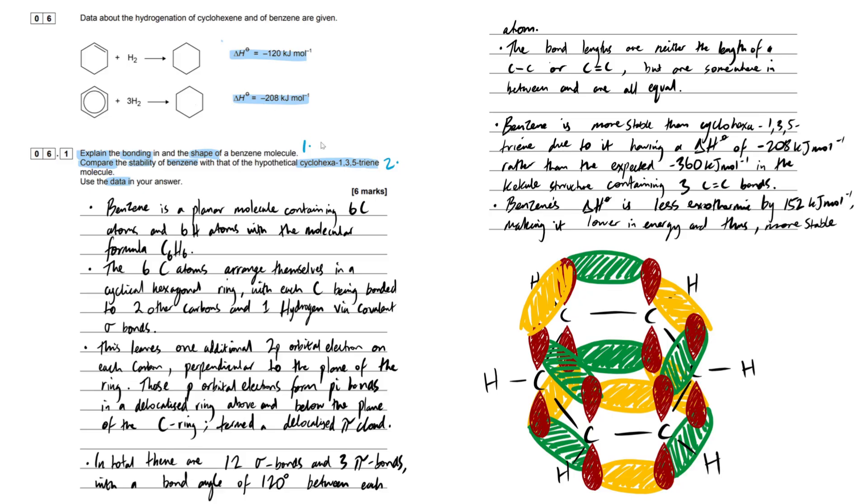That's point one done - we've spoken about bonding and shape. Let's compare the stability. Benzene is more stable than cyclohexa-1,3,5-triene due to having an enthalpy of hydrogenation of minus 208 kilojoules per mole rather than the expected value of minus 360 kilojoules per mole in the Kekulé structure with three carbon-carbon double bonds. You take minus 120 for one double bond and times it by three.